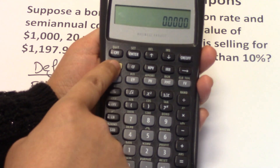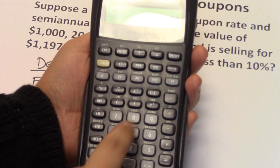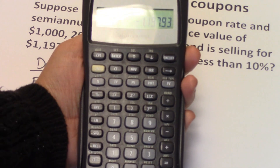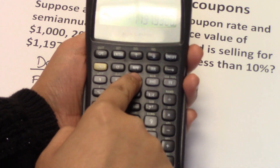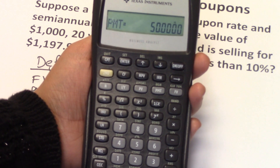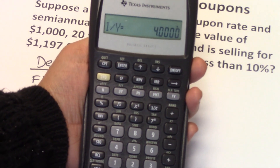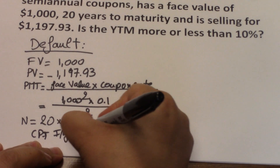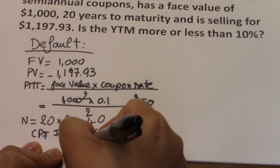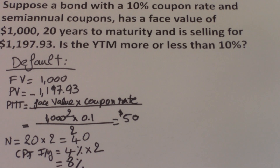Press 2nd FV then 2nd CE/C to clear all time value of money calculations. Enter: FV = 1,000; PV = negative 1,197.93; PMT = 50 (positive, since it's a cash inflow); N = 40. Then compute I/Y. You get I/Y = 4%. But this is the semi-annual yield to maturity. Multiply by 2 and you get 8%. So the yield to maturity is 8%.